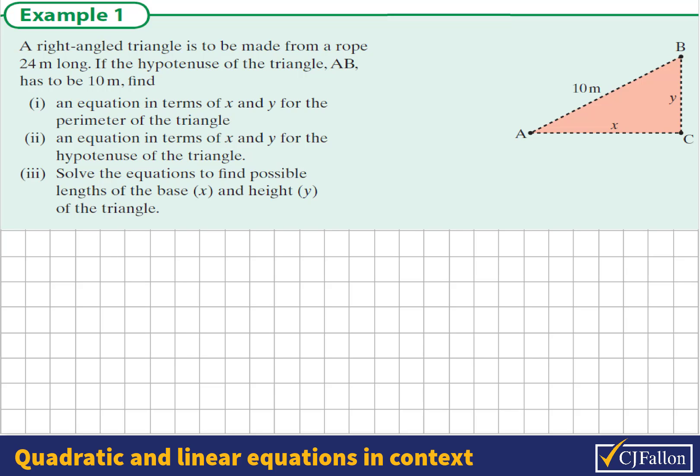Firstly, an equation in terms of x and y for the perimeter of the triangle. Now, the perimeter of a triangle is what we get if we add up the sides. We see from the diagram our sides are 10 meters, x and y. So the perimeter will be 10 plus x plus y added together. And this must equal 24 meters.